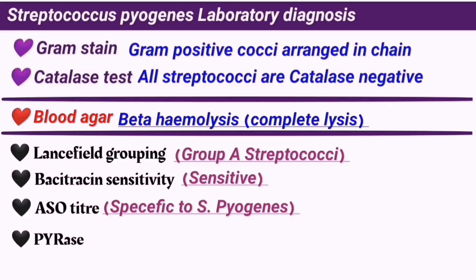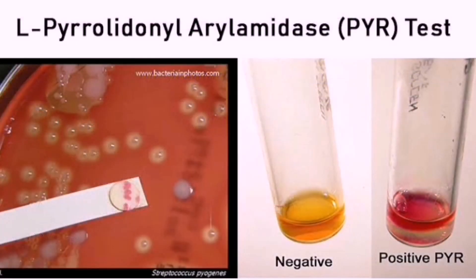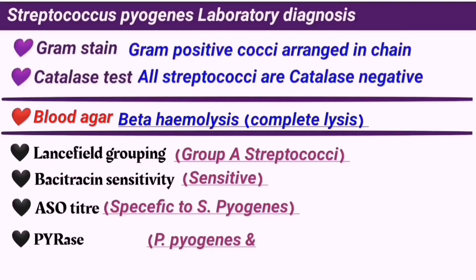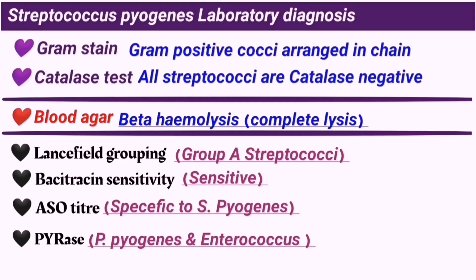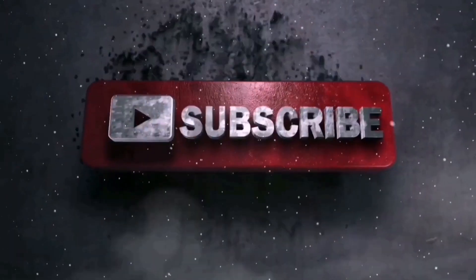The last test is the PYRase test, which is the L-pyrrolidonyl aminopeptidase present in S. pyogenes. It's also present in enterococcus, but these are very easy to differentiate from S. pyogenes, because they're not beta-hemolytic and they also belong to group D of the Lancefield grouping.